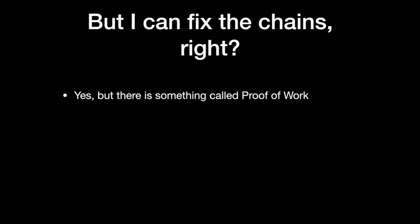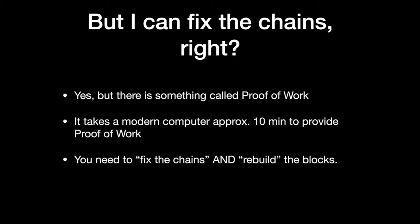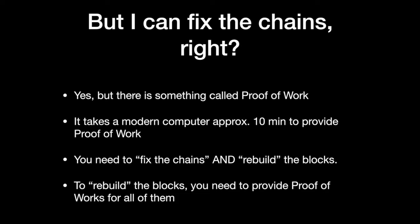It's not too hard for a modern computer to recalculate the hash functions. I'll just simply fix the chains. Sure you can, but blockchain has a system called proof of work. It takes a modern computer about 10 minutes to provide proof of work. And to use the analogy again, you need to fix the chains and rebuild the blocks. Essentially, new blocks need to be created in order to change data in a block. To rebuild the blocks, you need to provide proofs of work for all of them.